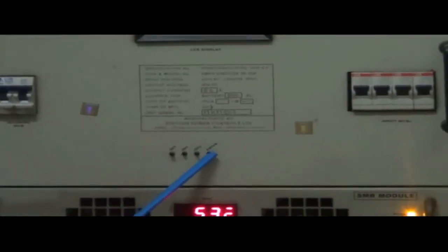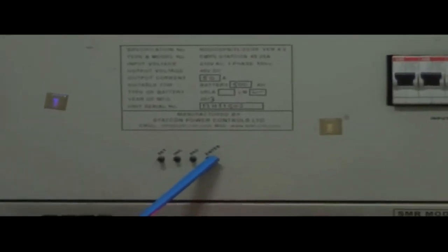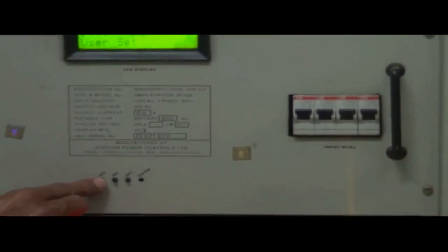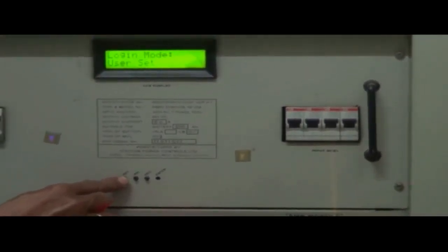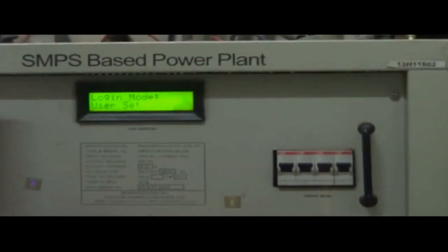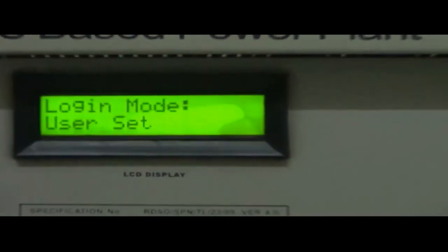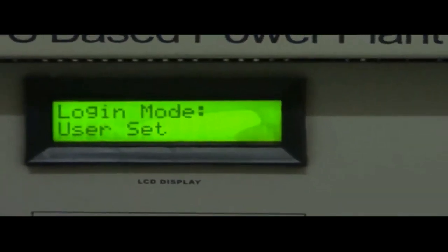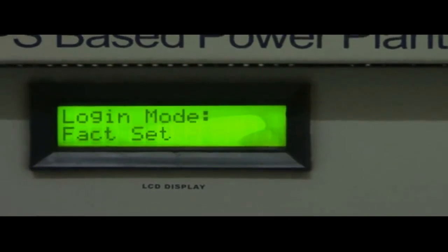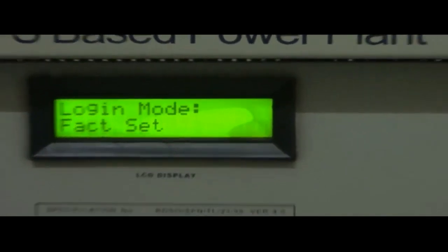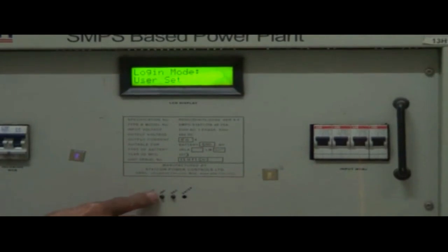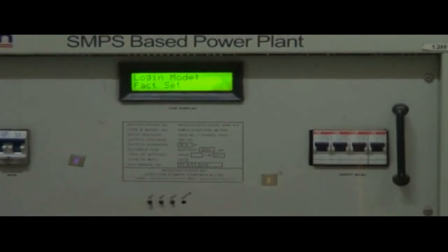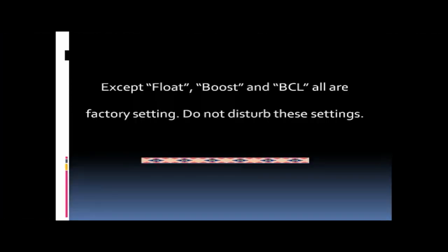To come to normal mode, press enter. To see the parameter values, press set for three seconds. The system will display login user set. Press set again to choose fact set. Except float, boost, and BCL, all are factory settings. Do not disturb these settings.